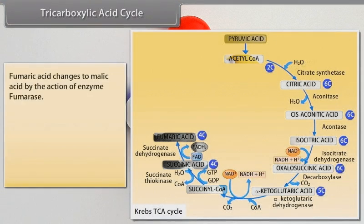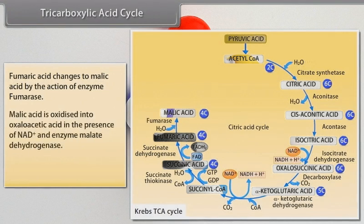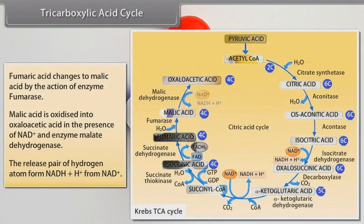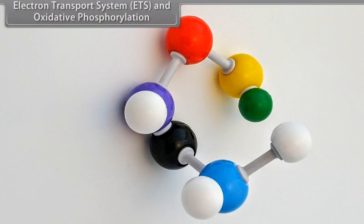Fumaric acid changes to malic acid by the action of enzyme fumarase. Malic acid is oxidized into oxaloacetic acid in the presence of NAD⁺ and enzyme malate dehydrogenase. The released pair of hydrogen atoms forms NADH + H⁺ from NAD⁺. This leads into the electron transport system (ETS) and oxidative phosphorylation.